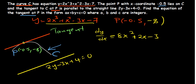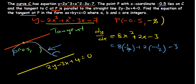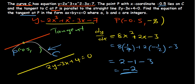Now we can plug in x equals negative 0.5. Since 0.5 is the same as one half: 8 times negative one half squared gives 8 times one quarter equals 2. Then plus 2 times negative one half gives negative 1. Then minus 3. So 2 minus 1 minus 3 equals negative 2. The gradient M of the curve at point P is negative 2.